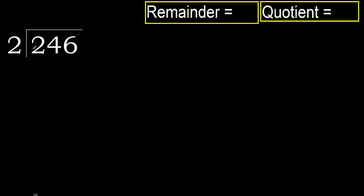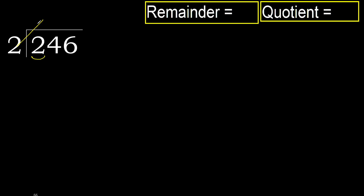246 divided by 2. 2 is not less, therefore work with 2. 2 multiplied by which number is nearest to 2 but not greater? 2 multiplied by 2 is 4 — 4 is greater. Multiplied by 1 is 2, it's not greater. 2 minus 2 is 0. Next.